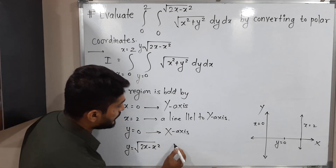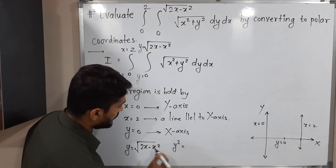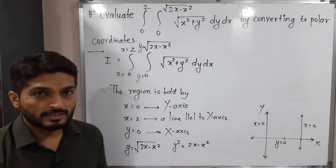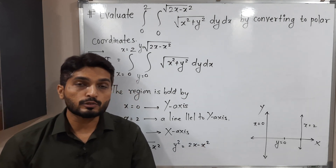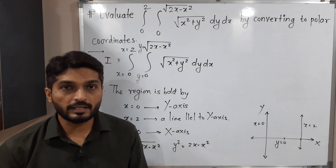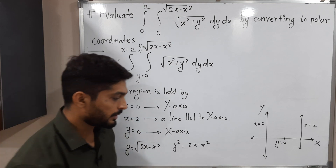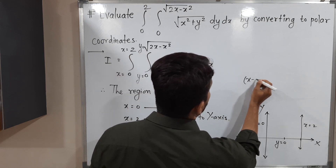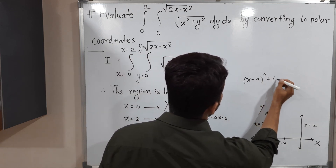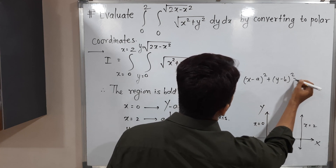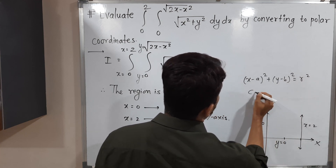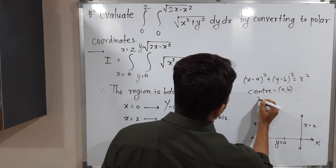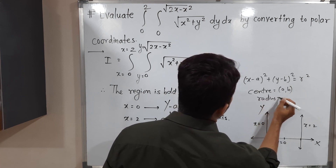Squaring gives Y² = 2x − x², which is the equation of a circle, but not in standard form. The standard form of a circle is (x − a)² + (y − b)² = r², where the center is (a, b) and the radius is r. We will try to express our equation in that standard form.